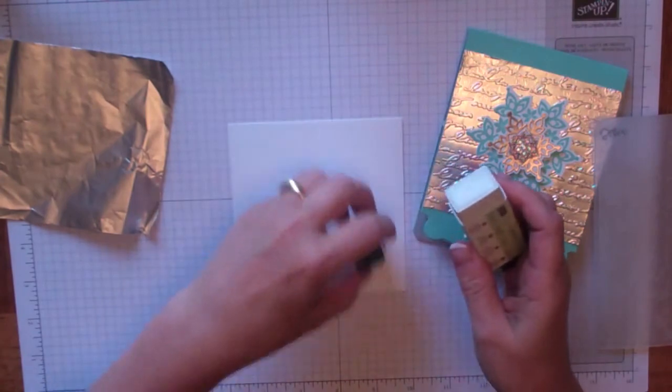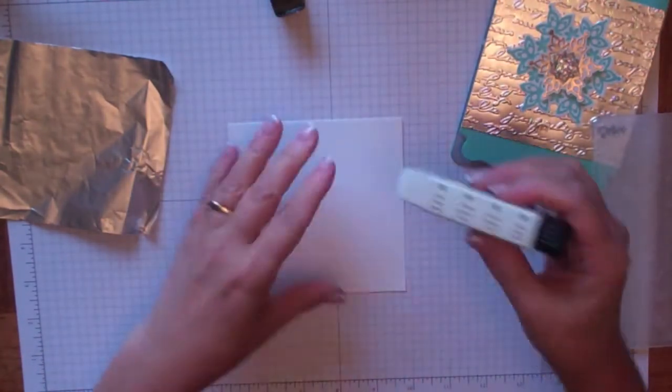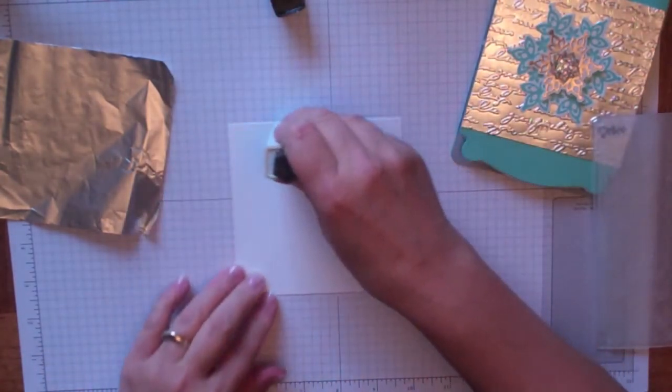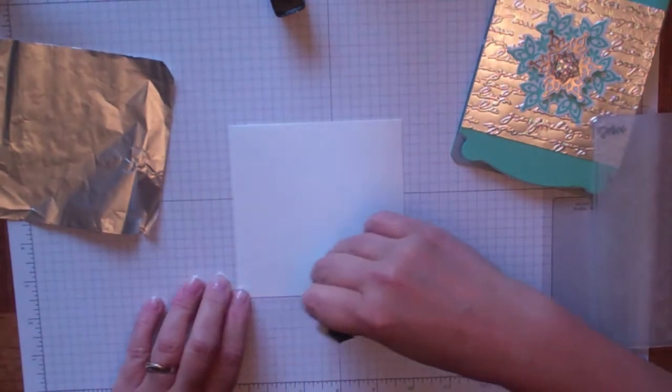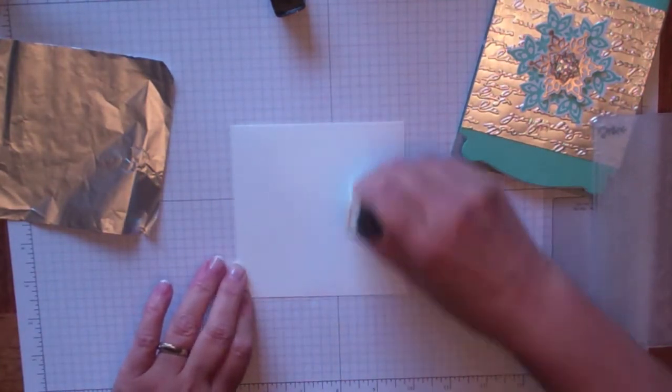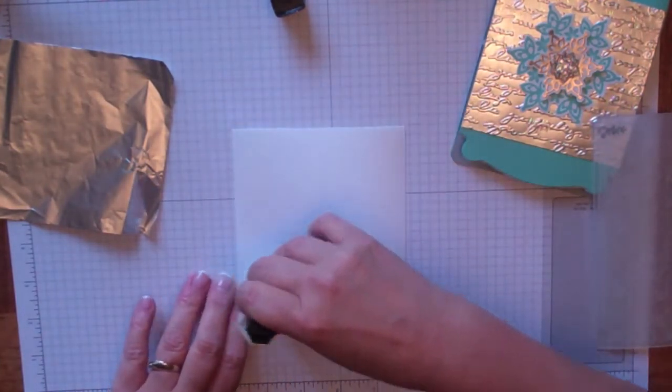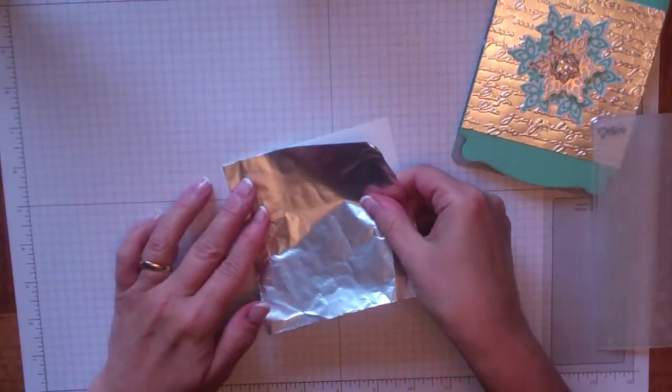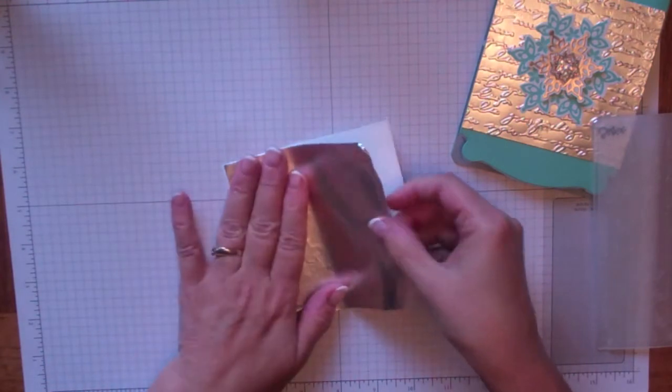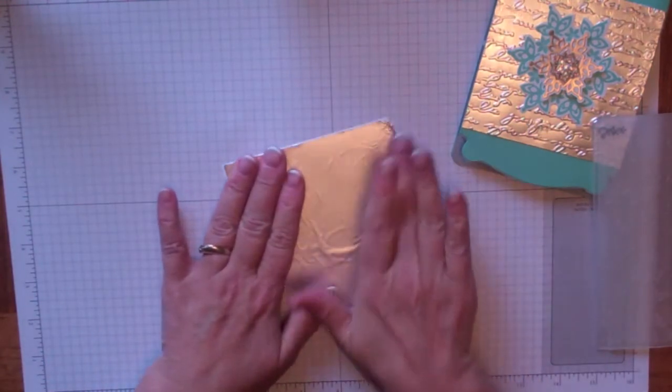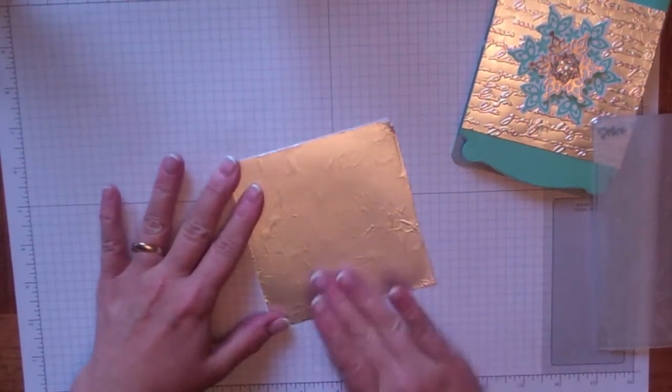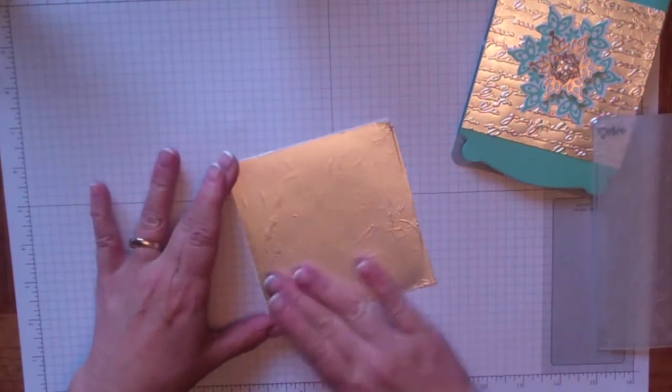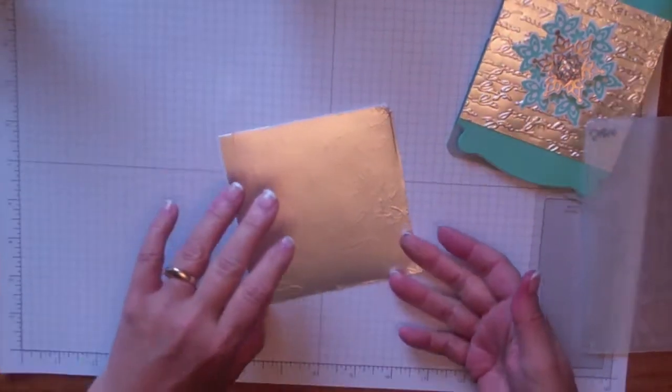I use just a regular Stampin' Up glue stick, which are the best. They're so easy to use. They'll gum up, go right into the corners. Cover this whole piece like so. This is a bit tricky because the paper wants to curl, but just start on the edge and then brush it out to the sides, just like that. You don't have to worry about the crinkles because they'll disappear once you run it through the embossing folder.